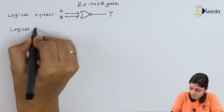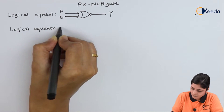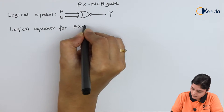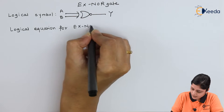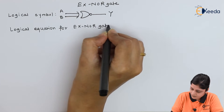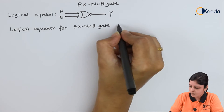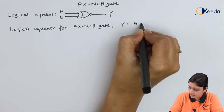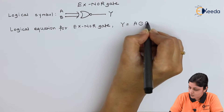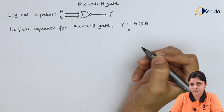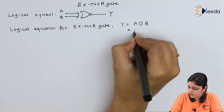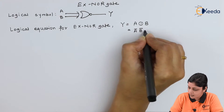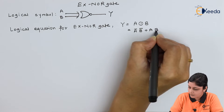The logical equation for the XNOR gate is: Y equals A XNOR B, or in expanded form, Y equals Ā·B̄ + A·B.